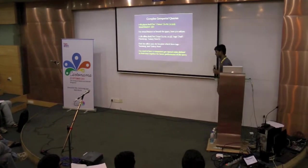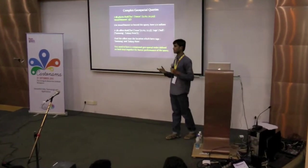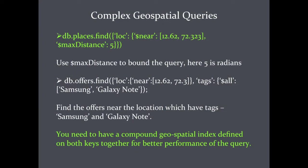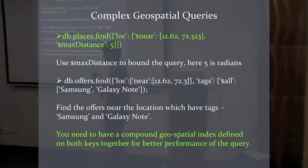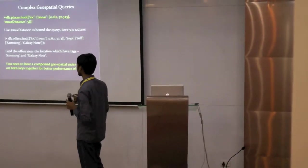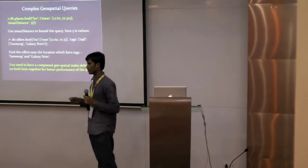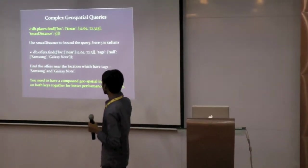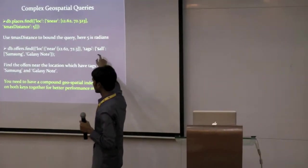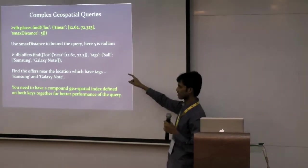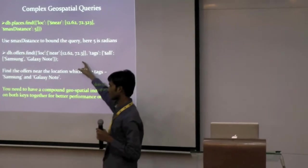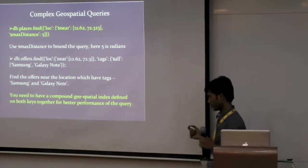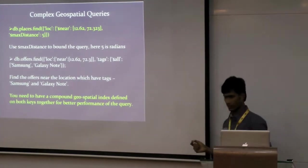And then, if you have complex queries, like let's say if I want to know the closest places within a distance of five kilometers. So, those are possible, you can just say maximum, dollar max distance is five. And something which is specific to us. Basically, I've finished away you basically search for Samsung and Galaxy Note or something. I want to know the offers near this location, near my location, which basically are Samsung and Galaxy Note. So, I can basically do, so that's what I created a compound index before. Because then this query should be much faster. If you don't create a compound index, then this query should not be faster. But if you create this as the index, and then you make the query, it does the query much faster. So, you need-based compound geospatial index depend on both keys together for better performance.